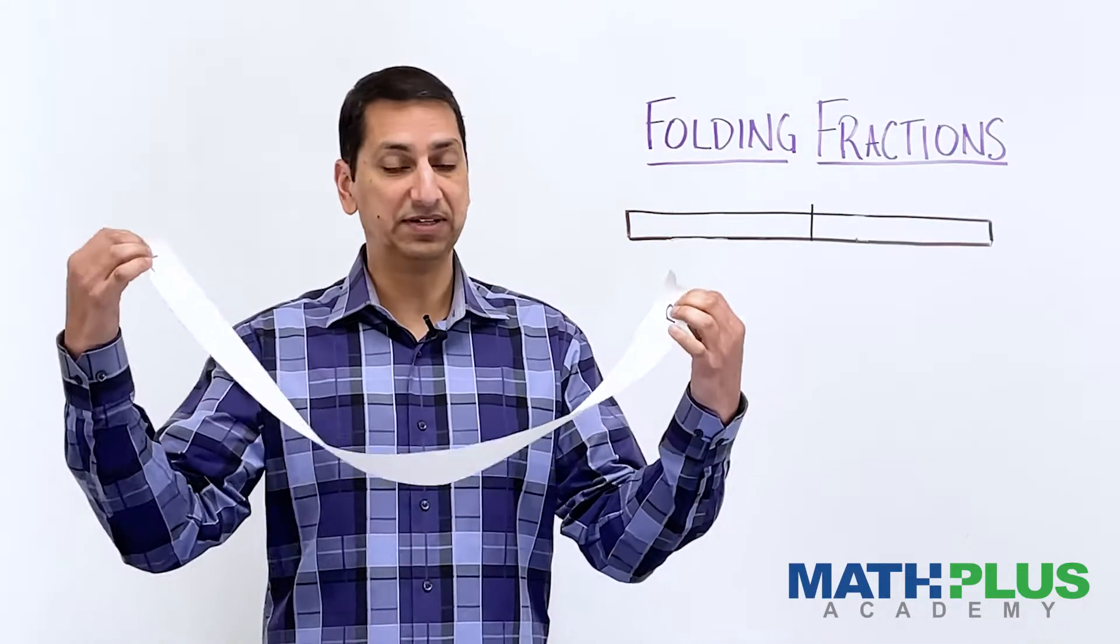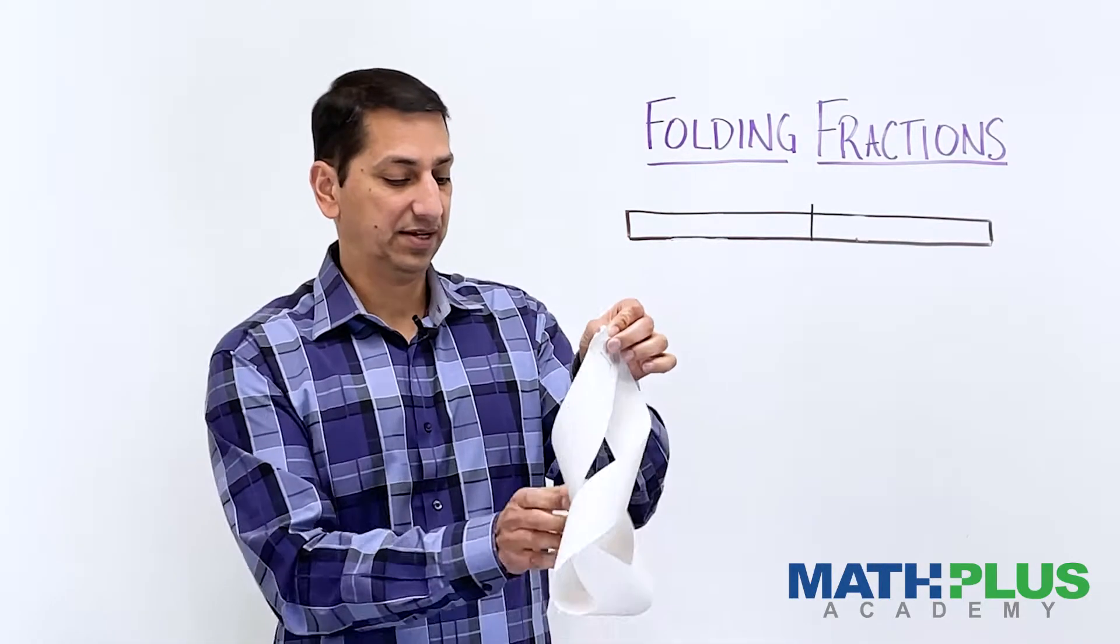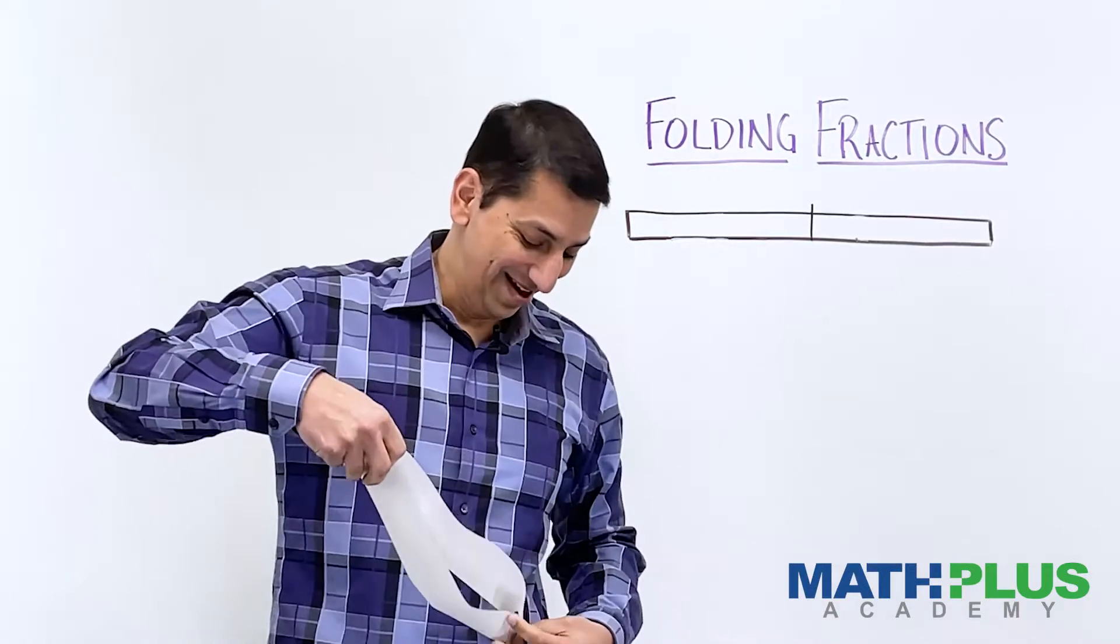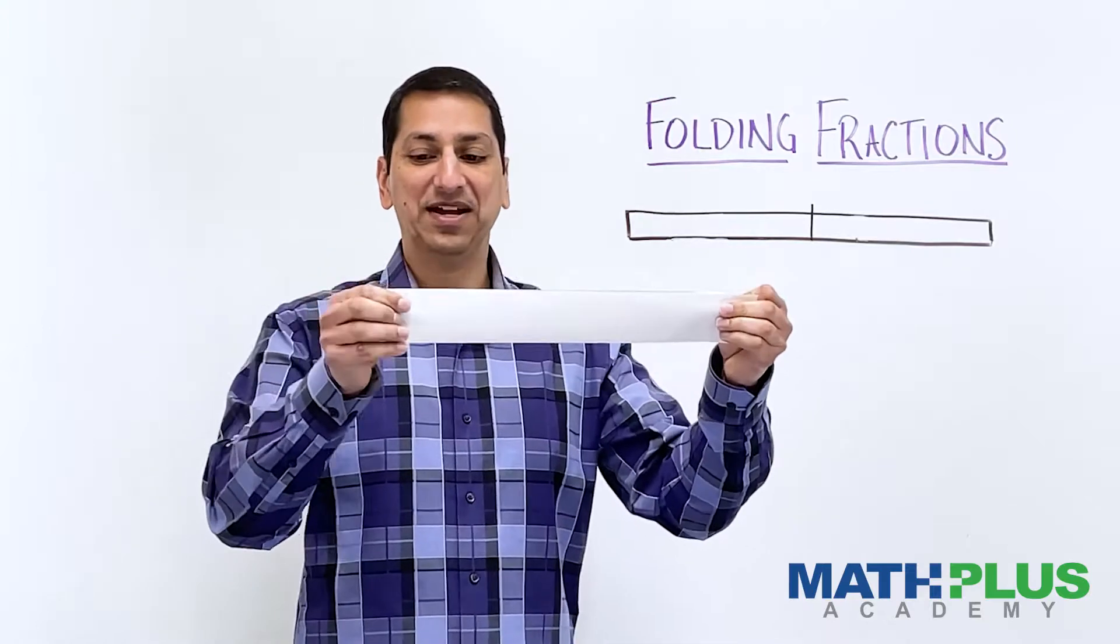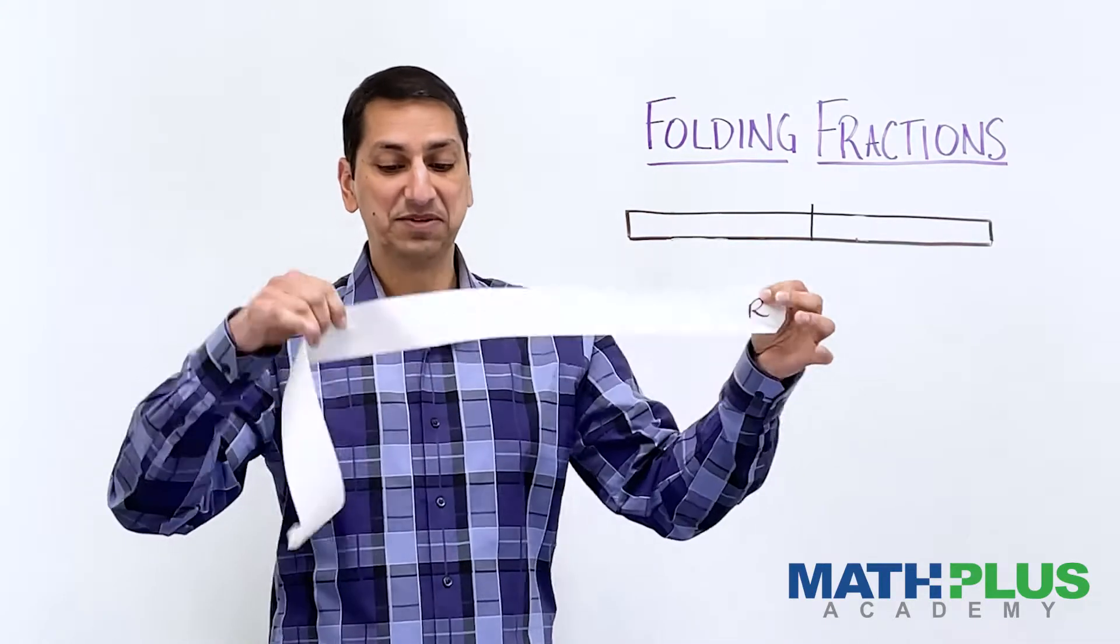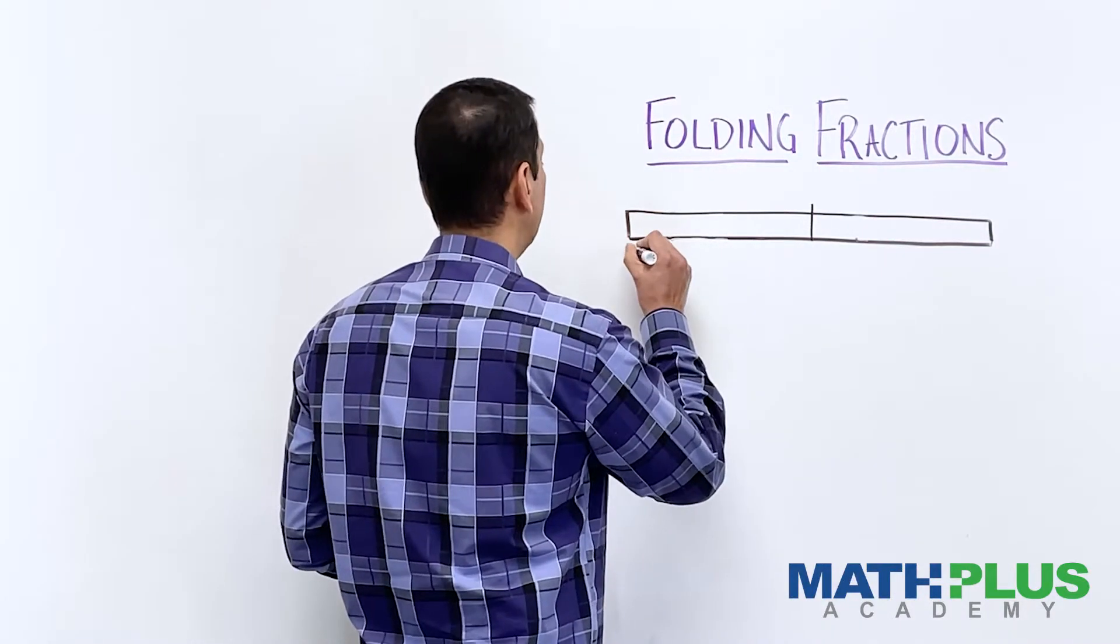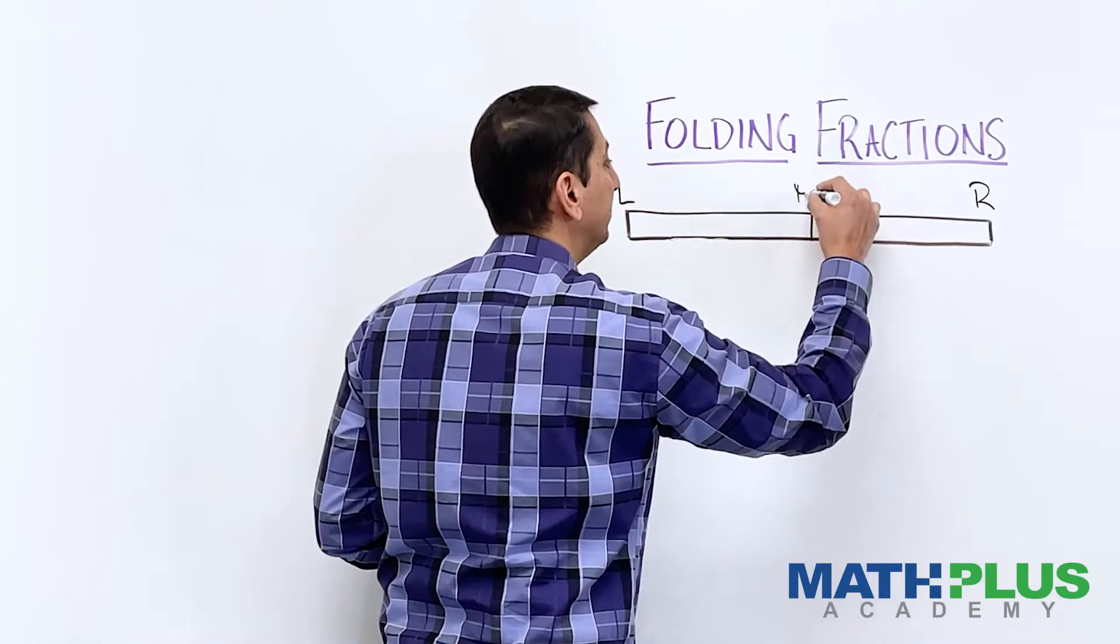The rules are going to be very simple. We're going to take the left edge and fold it over to the right and crease it. That, of course, is going to give us a crease. That's going to give me a crease in the middle, and I'm going to mark that spot M. So we're going to mark this side L, this side R, and that new crease is M.